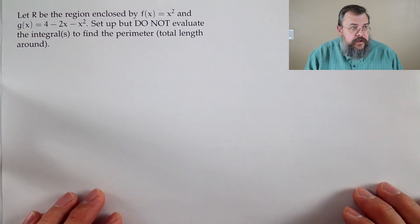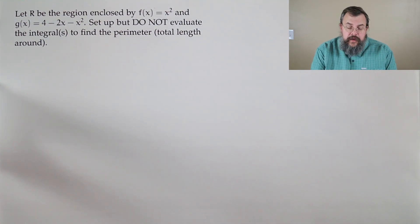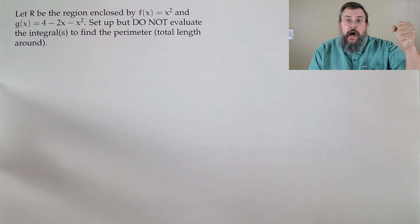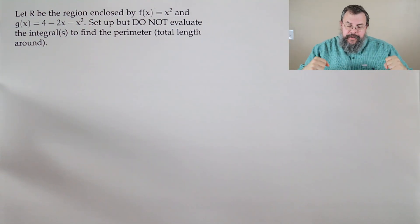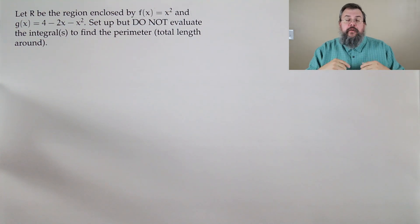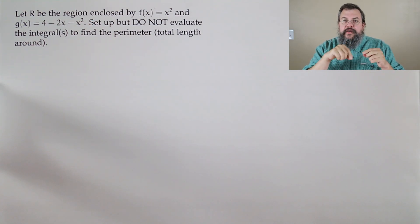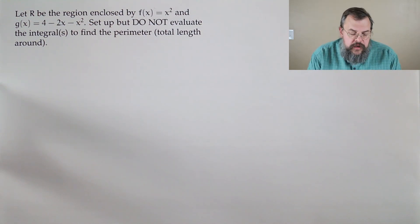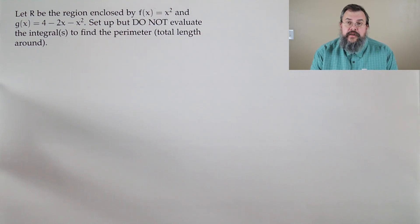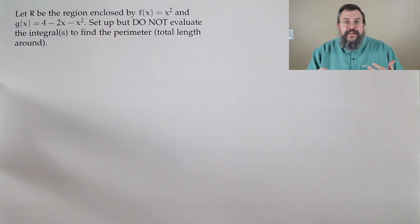Our next problem: let R be the region enclosed by f(x) equals x squared and g(x) equals 4 minus 2x minus x squared. Set up, but do not evaluate, an integral to find the perimeter. The perimeter means the length along the edge of the shape. Notice we don't have any bounds given, so we need to think about how to deal with that — let's start by drawing a picture.